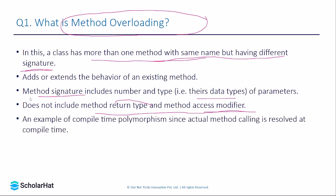As mentioned, method overloading is an example of compile-time polymorphism because the actual calling method is resolved at compile time only. This can be asked in an interview — what is compile-time polymorphism or what is method overloading — and the answer to both is the same: one method with the same name can have different parameters.